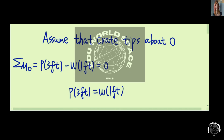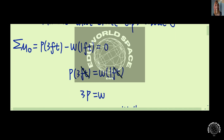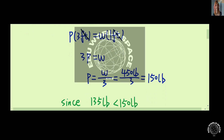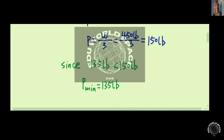The unit feet cancels out, giving us 3P equals W. So P in this case equals 150 pounds. Since 135 pounds is less than 150 pounds, the smallest value for force P should be equal to 135 pounds. In order to move the crates, the minimum amount of force that can be applied should be equal to 135 pounds.